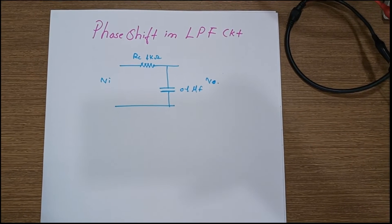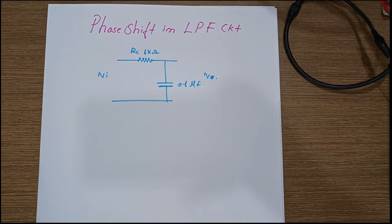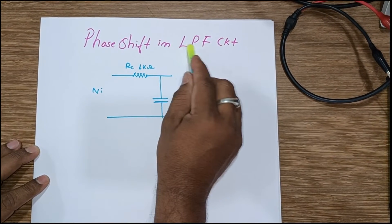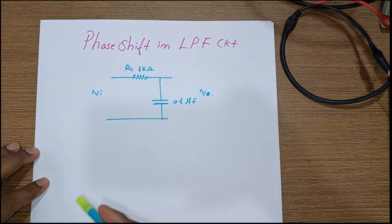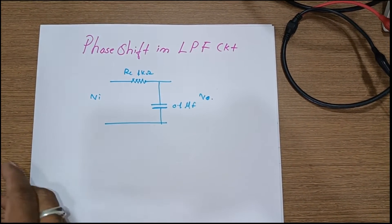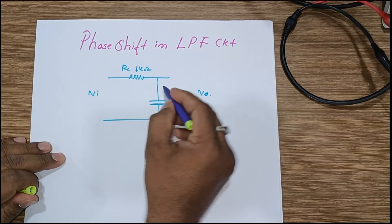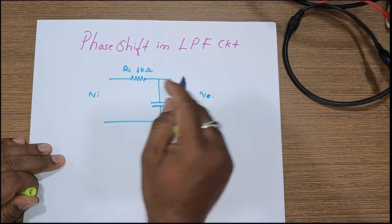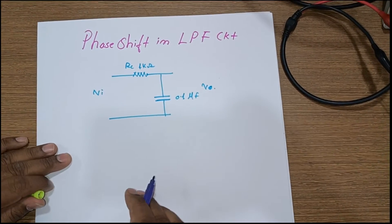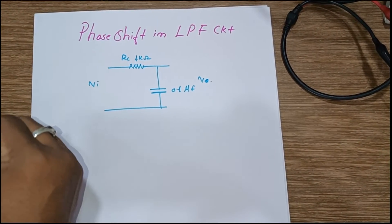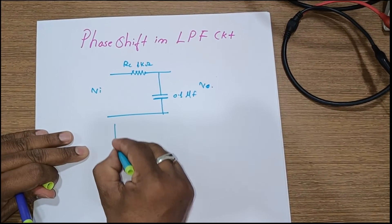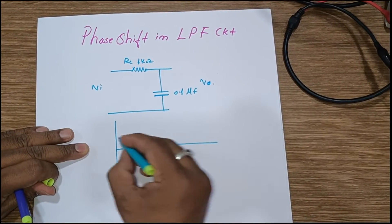Hello friend, welcome to Hunt Electronics. In today's technical session we are going to discuss about the phase shift in a low-pass filter. The diagram described below is of a low-pass filter where the capacitor is in the shunt and the resistor is in the series. When we give the input to the circuitry, suppose this is the input.